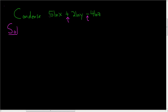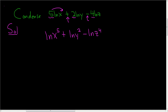The thing is, we have these constants in front of the logarithms. So to put those in another place, we can use the power rule. You can bring them upstairs using the power rule. So this becomes the natural log of x to the fifth power, plus the natural log of y to the second power, minus the natural log of z to the fourth power.